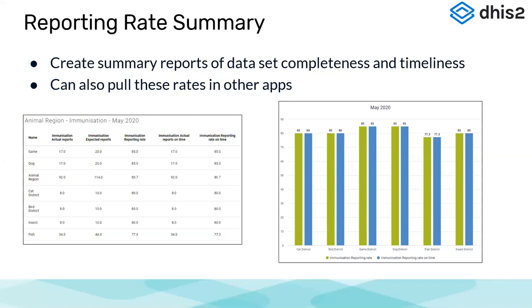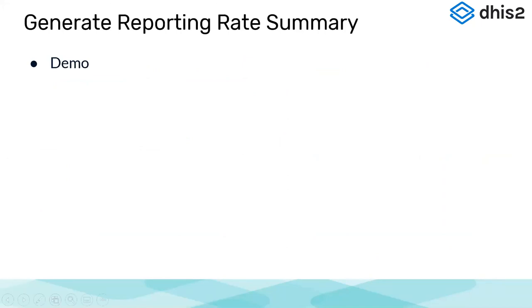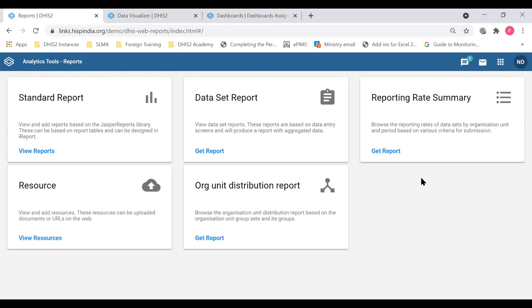Welcome back everyone. We're going to start the final session for today on Reporting Rate Summary. This is a module in the Reports app where we can create summary reports of data set completeness and timeliness. Importantly, you can also pull these same rates in other apps, which we will show. I will go to the demonstration.